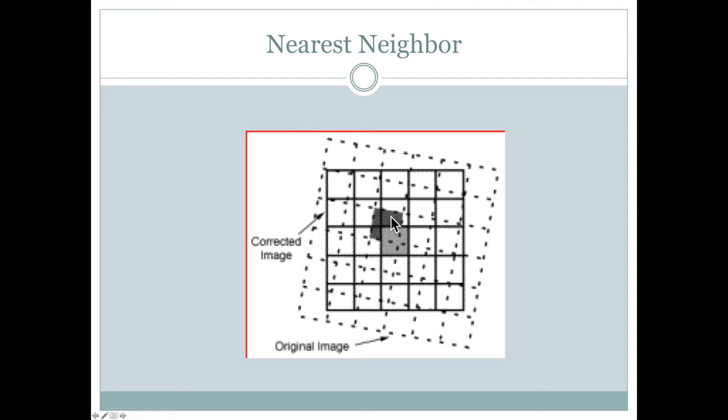So this darker gray pixel that was located here is not located here. And whatever value this pixel had would now be assigned to this value just because it's the nearest neighbor. It's the closest in distance. The center of this grid cell is the closest in distance to the center of this grid cell.